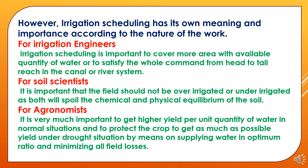Irrigation scheduling has its own meaning and importance according to the nature of work. First, for irrigation engineers, it is important to cover more area with the available quantity of water, or to satisfy the whole command from head to tail reach in the canal or river system. Second, for soil scientists, it is important that the field should not be over-irrigated or under-irrigated, as both will spoil the chemical and physical equilibrium of the soil.